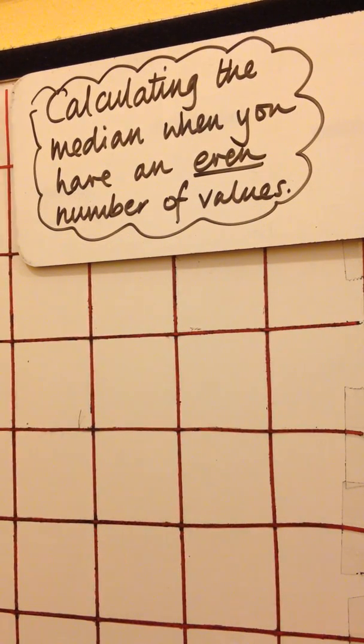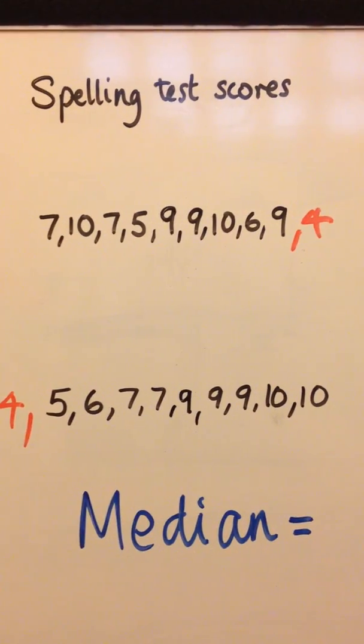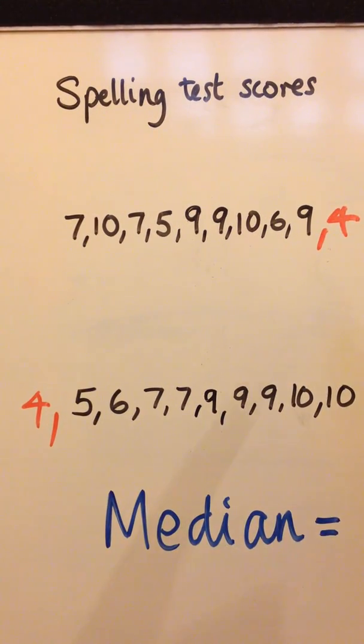Calculate the median when you have an even number of values. Here are our spelling test scores again, but this time I've added an extra child on the end who scored 4. So we have 10 children in this set of data.